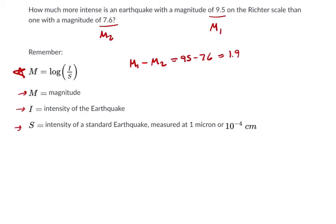But that really means this one right here is the log of the first intensity over S, and this one is the log, call it I1, of the second intensity for the second earthquake over S. And that equals 1.9.